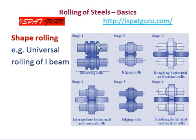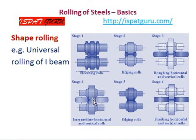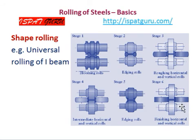This pictorially shows the rolling of I-beams: the initial rolling in two-high stands, then further reduction in two-high stands, then four-high stands where the flanges are being developed. Then in four-high stands the flanges and web are being reduced. Then again two-high stands, and the final pass is in four-high stands where the final I-beam product is rolled.